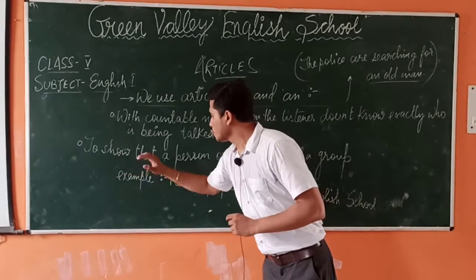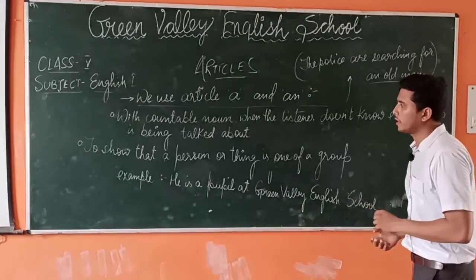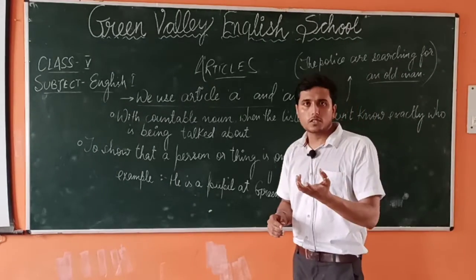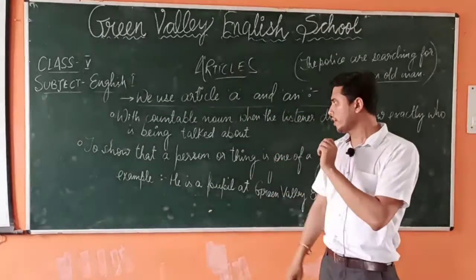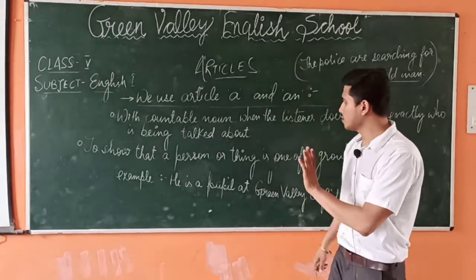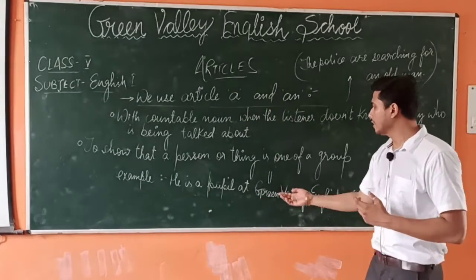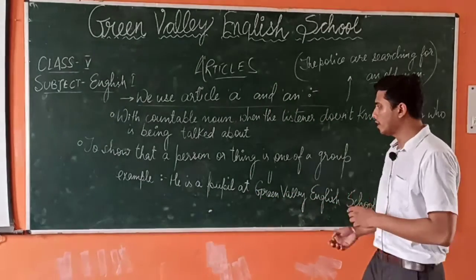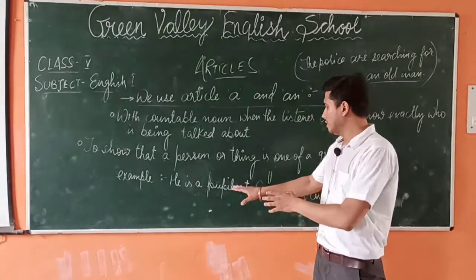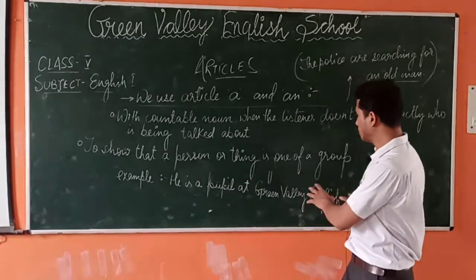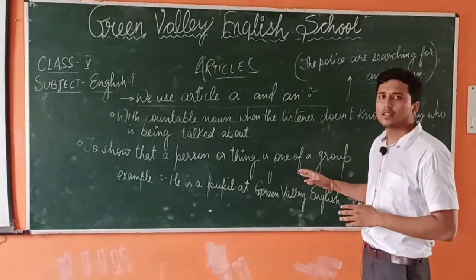The next condition is to show that a person or a thing is one of a group. When we show one person or thing from a group, we use a or an. For example, 'He is a student of art in his school.' It means he is studying there — he is a part of the school.